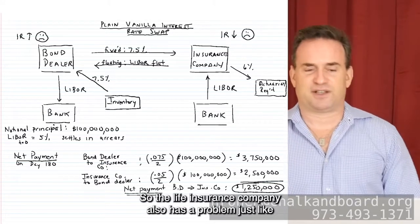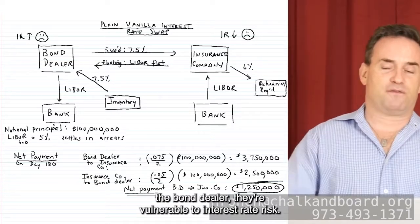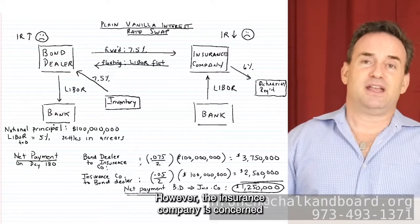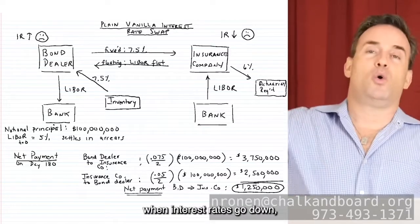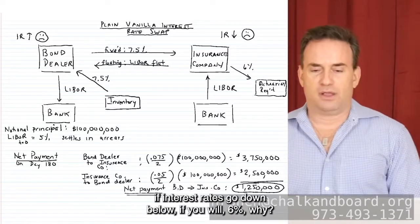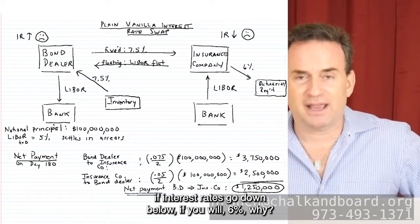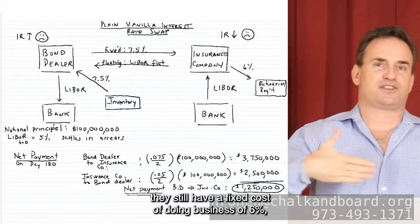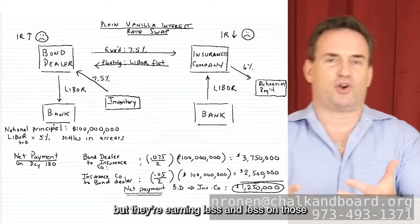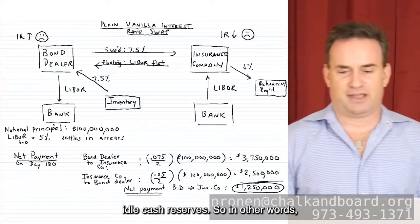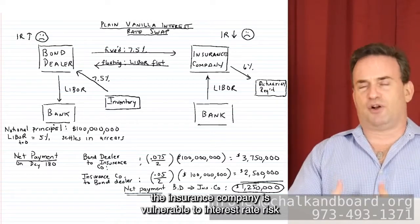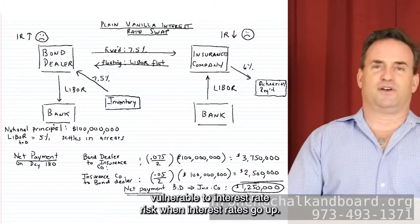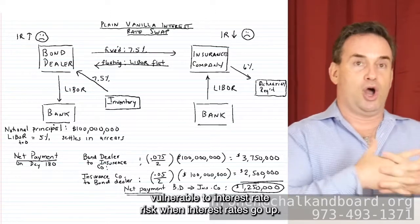So the life insurance company also has a problem just like the bond dealer — they're vulnerable to interest rate risk. However, the insurance company is concerned when interest rates go down below 6%. Because if interest rates go down below 6%, they still have a fixed cost of doing business of 6% but they're earning less and less on those idle cash reserves. So the insurance company is vulnerable when interest rates go down, and the bond dealer is vulnerable when interest rates go up.